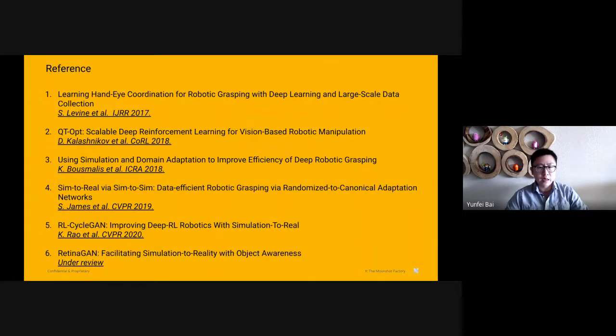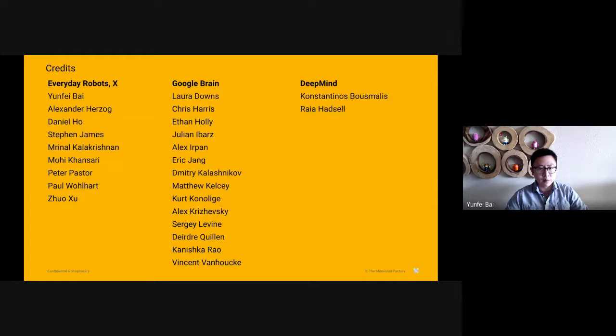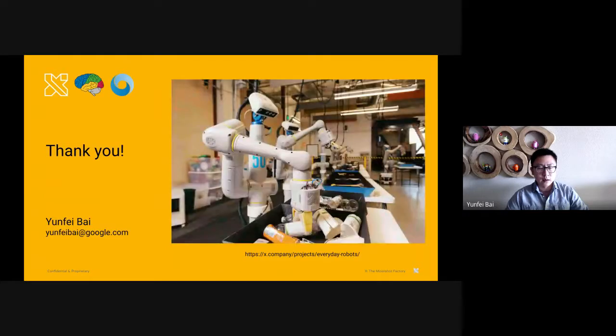Here are the papers we published for these projects that I presented today. Here are the people who were involved in those projects. The works are done by a large group of people across X everyday robot projects, Google Brain, and DeepMind. And finally, thanks for your attention. Be sure to check out our Everyday Robot Project website. Thank you.